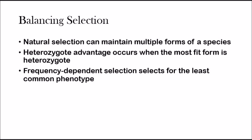The heterozygote advantage is when it's better for an organism to be a heterozygote. Homozygous individuals have two dominant alleles or two recessive alleles, while heterozygotes have one dominant and one recessive allele. When natural selection selects for the heterozygote advantage, it's good for a population because the heterozygote has both the dominant and recessive allele, keeping genetic variation — compared to homozygous individuals, which only have two dominant or two recessive alleles.